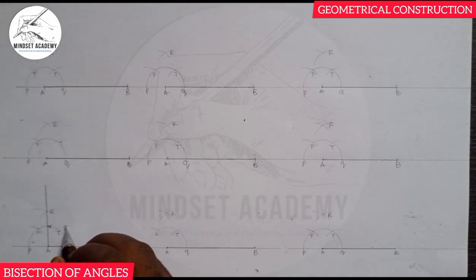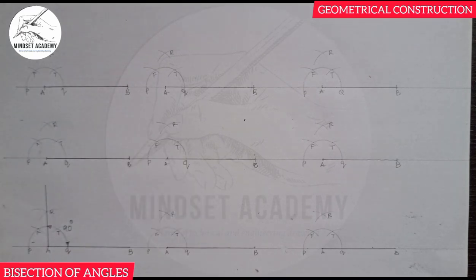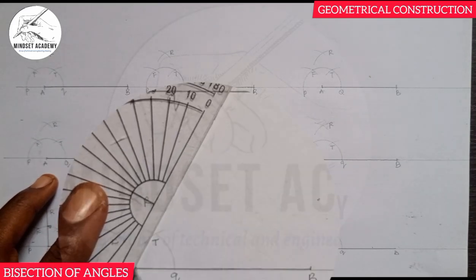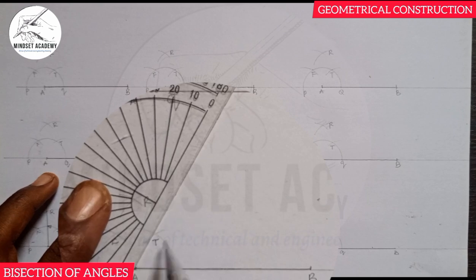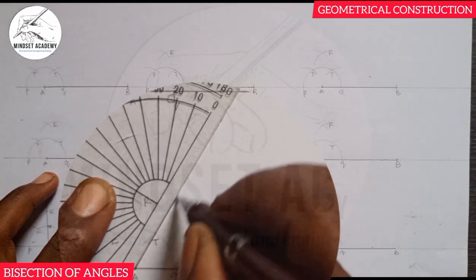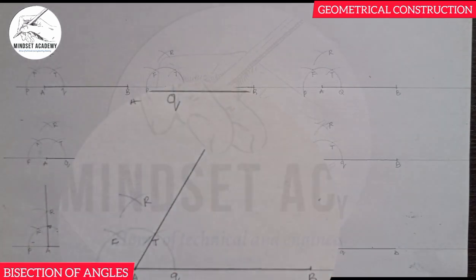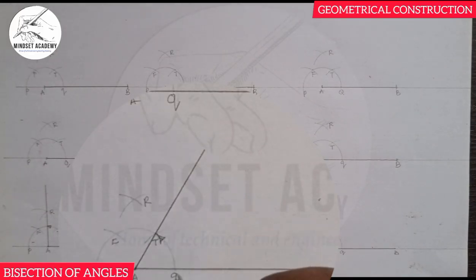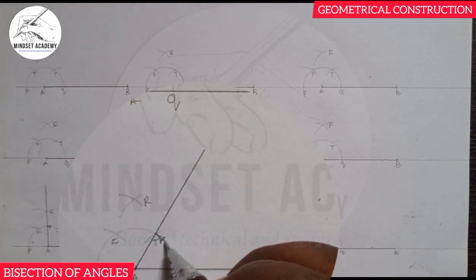We call it 90° when the line passes through Arrow from A. If you pass through point T, that is 60°.